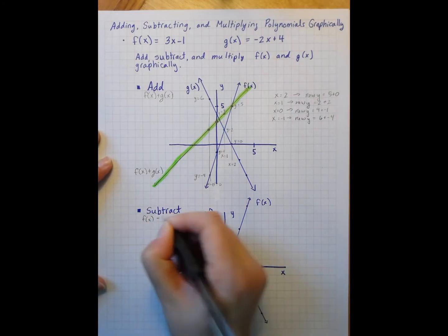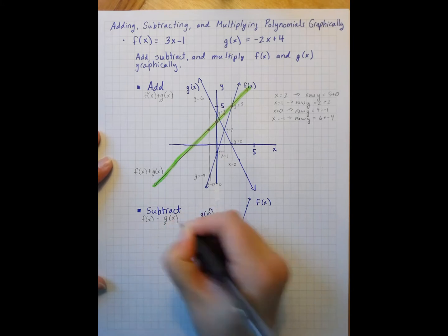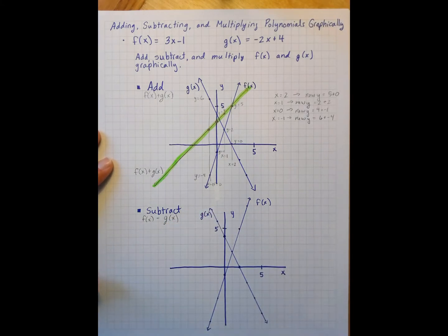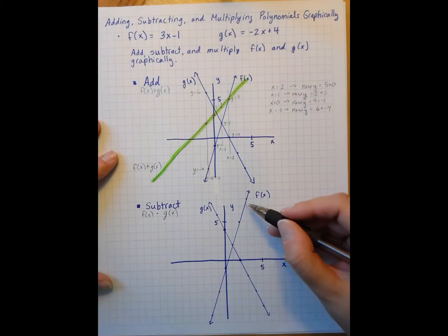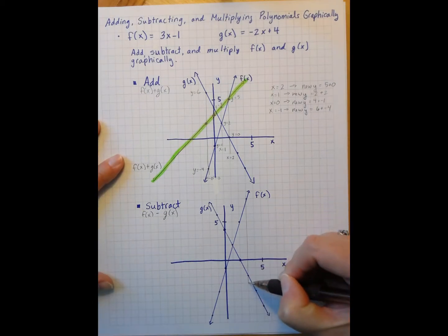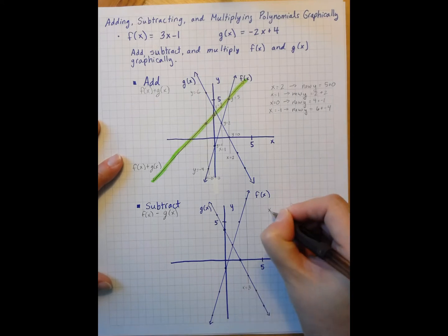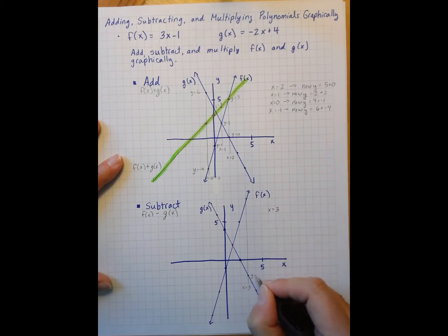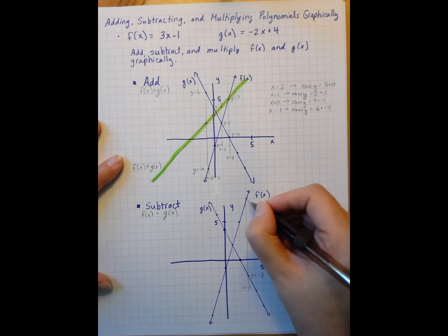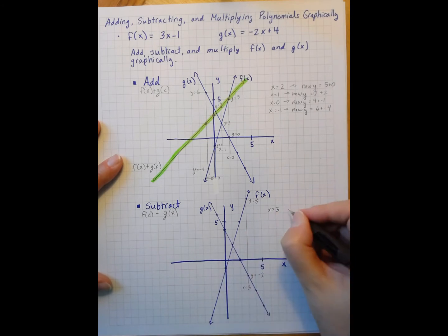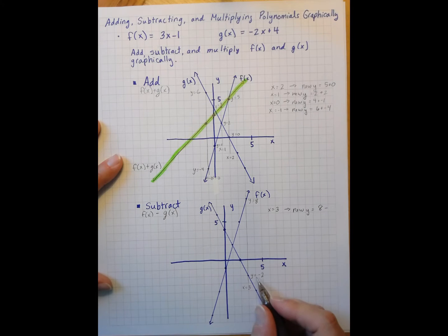Just to specify, I am doing f of x minus g of x because the order here will matter. So I'm going to use the exact same process. I'm going to start here where x is 3. So when x is 3, I have a y of negative 2 and a y of 8. So I want to do my f of x first. So my new y is going to equal f of x minus my g of x y, so negative 2, which means I actually have a y of 10.